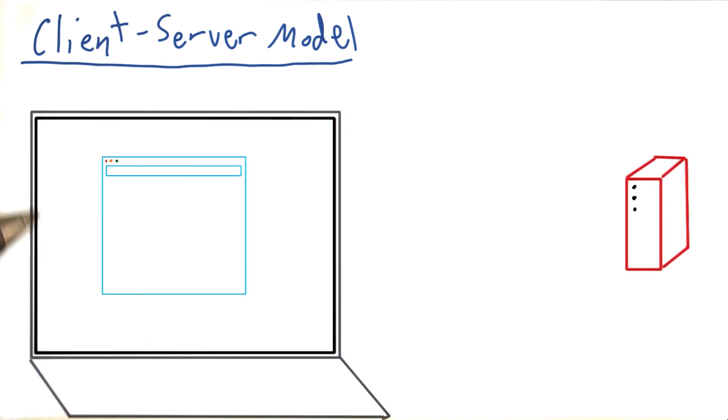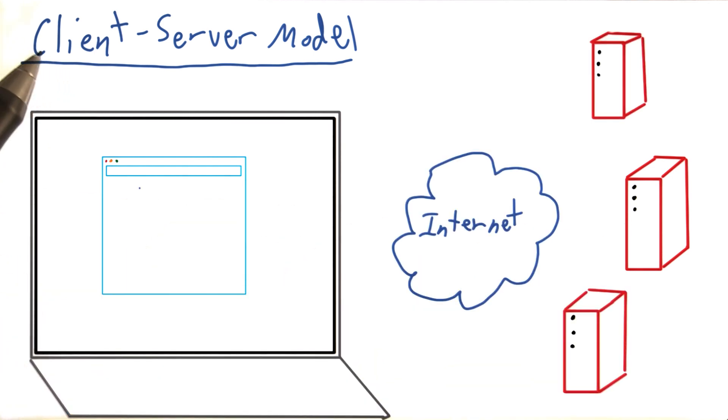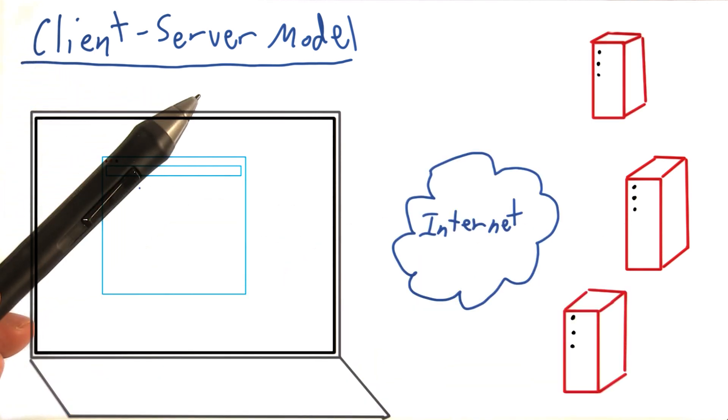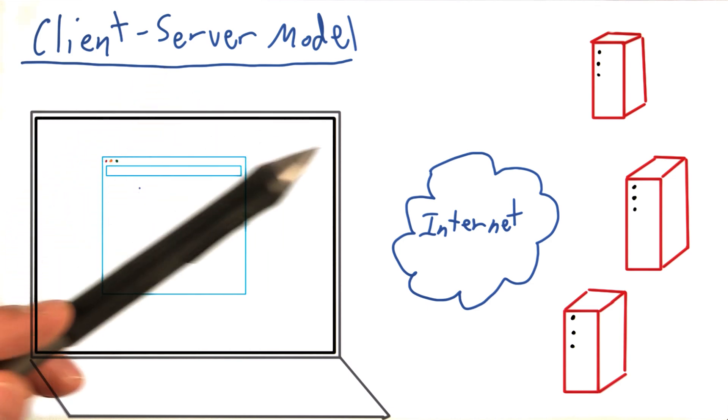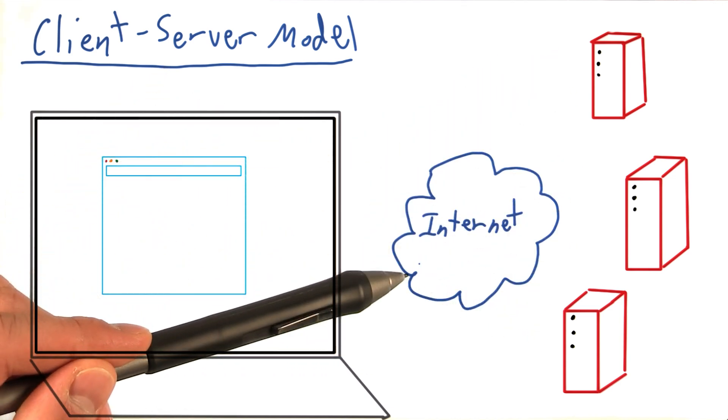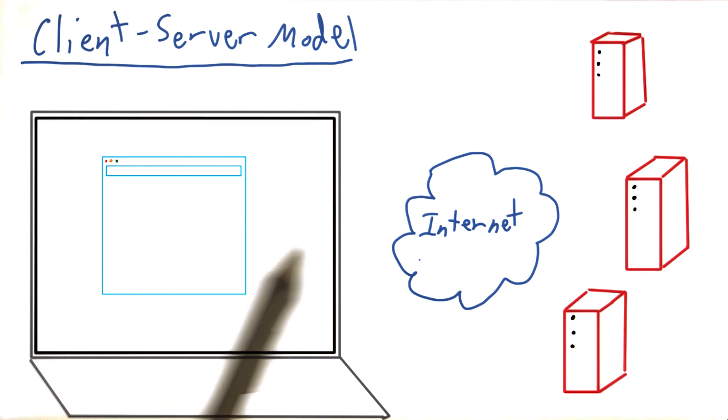Typically, everything that happens on the internet happens between two or more computers, most often your laptop and some external server. Without going into too much excruciating detail, the way the world wide web works is by creating a network of all the computers on the internet so that they can intercommunicate.